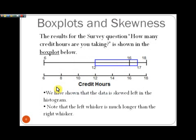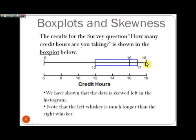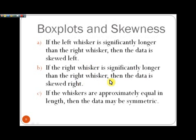There is also an association between box plots and skewness. With that same data in a box plot, the minimum credit hours enrolled is six, the first quartile is 12, the median is 16 hours, the third quartile is 17 hours, and the maximum is 18. Notice that the left whisker is a lot longer than the right whisker — that's another way to determine skewness. If one whisker is significantly longer, the data is skewed toward the longer whisker. A longer left whisker means skewed left; a significantly longer right whisker means skewed right.